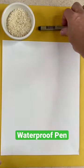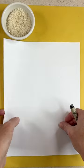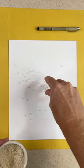Here's a great way to make some collage paper. You need a pen that's waterproof, a little sheet of paper, and then some dried rice.